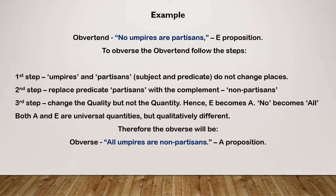Now let us do obversion. 'No umpires are partisan' — it is an E proposition. The obverse we get is 'all umpires are non-partisans.' How did we go from the E proposition to this A proposition? First, there is no interchange of subject and predicate. Second, the predicate term 'partisans' is replaced by its complement 'non-partisans.' Third, change the quality but not the quantity. The quality here is negative and the quantity is universal. So universal negative becomes universal affirmative — 'no' becomes 'all.' Both A and E are universal quantities but qualitatively different. In this way we get the obverse: 'all umpires are non-partisans.'